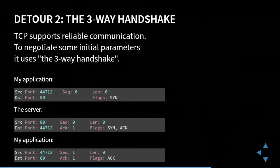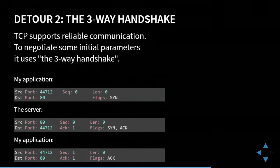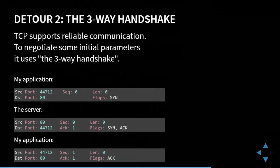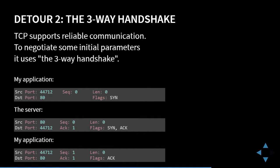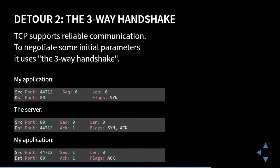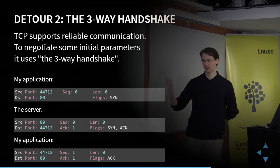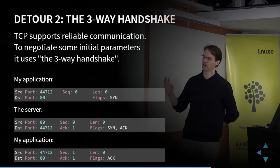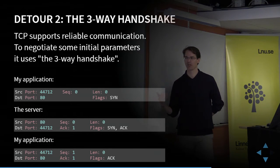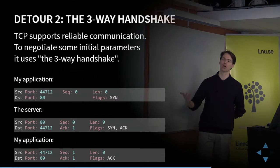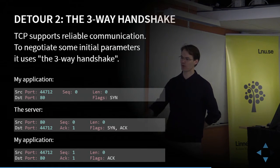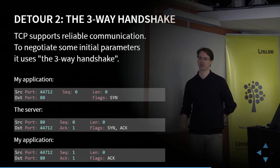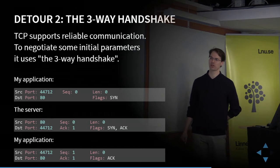Staying at the transport layer, let's look at the TCP three-way handshake — this connection must be established even before the HTTP message is sent. My computer initiates communication by sending a TCP message containing my source port, the destination port, a sequence number, a length field, and a flag: SYN (synchronization). My application is asking the server: please can we establish a connection? The sequence number here is zero, though in reality it's a random number.